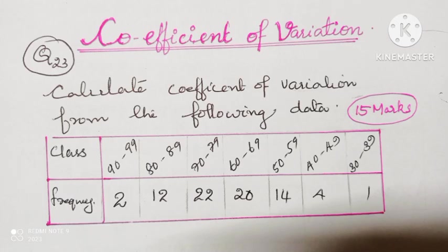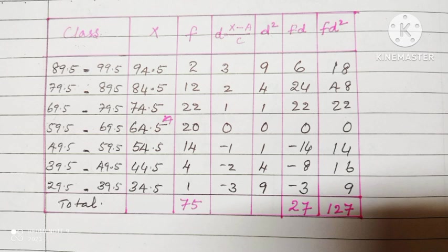For that purpose, we have to make a table. Class is given. Next column is x, that is the mid-value. Frequency is given. d is there. Then d square we are finding 3 into 39, 2 into 244. Next column is fd, that means the product of f and d. Last column is f into d square. Finding the sum of all frequencies that is 75, f into d sum is 27, f into d square sum is 127.